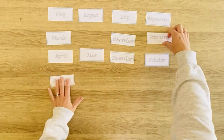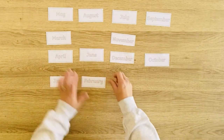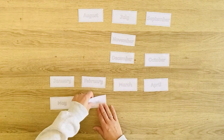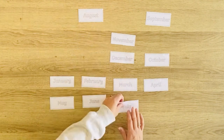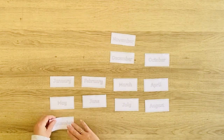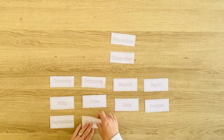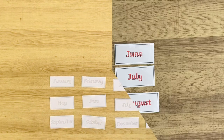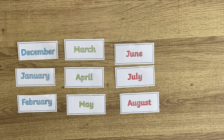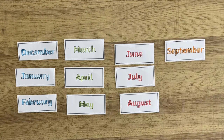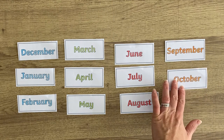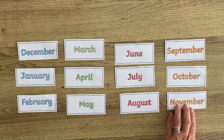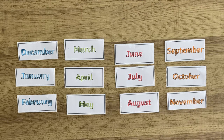Why not use these month of the year flashcards, cut them out and place them in the correct order from January to December? This could then move on to talking about seasons and separating the different months into the four different seasons, colouring each set differently.